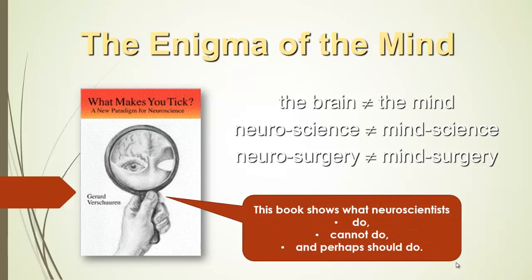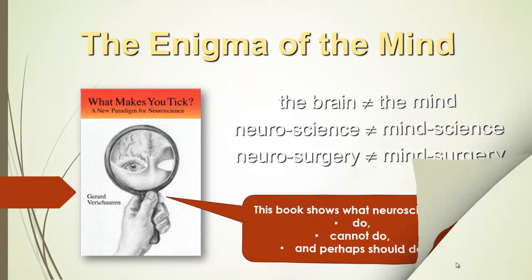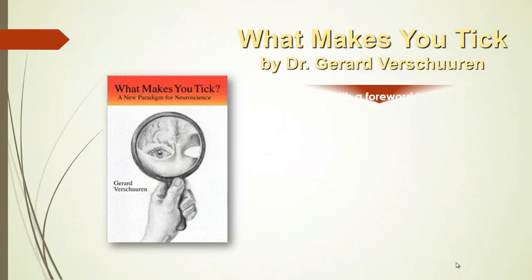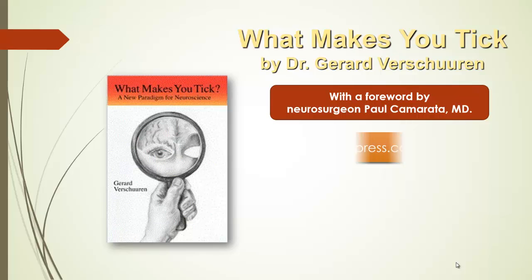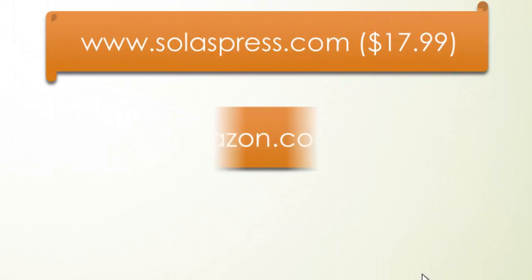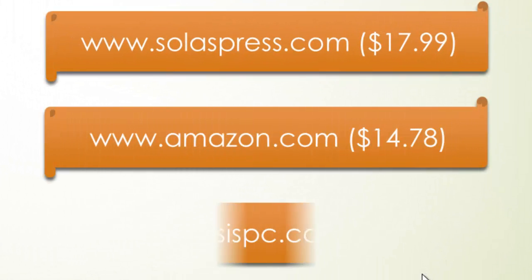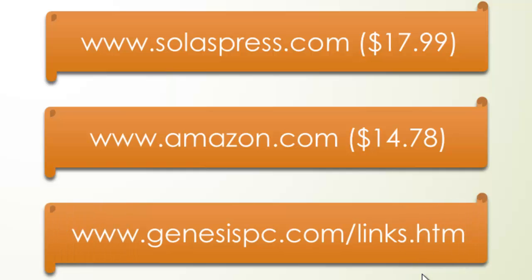This book shows what neuroscientists do, what they cannot do, and perhaps what they should do. So, you can find this book with a foreword by neurosurgeon Paul Camarato on the website of Solars Press, amazon.com, or you can go to the links page of genesispc.com.